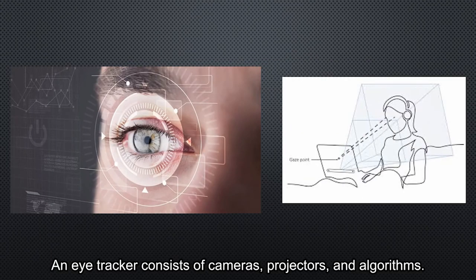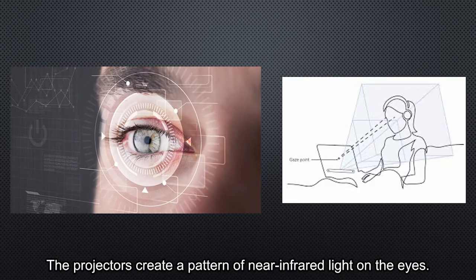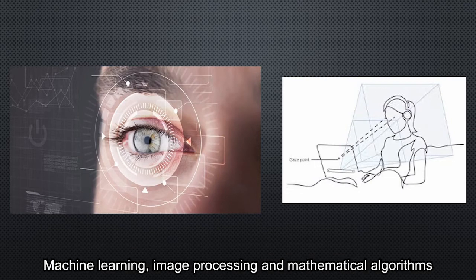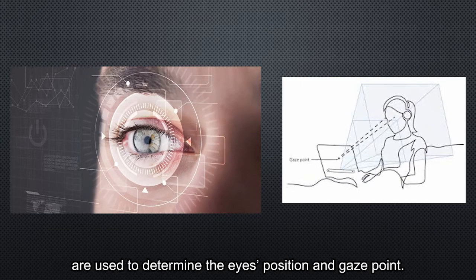An eye-tracker consists of a camera, registrar, and algorithms. The registrar creates a pattern of near-infrared light on the eyes. The cameras capture high-resolution images of the user's eyes and the pattern. Machine learning, image processing, and mathematical algorithms are used to determine the eye's position and gaze point.